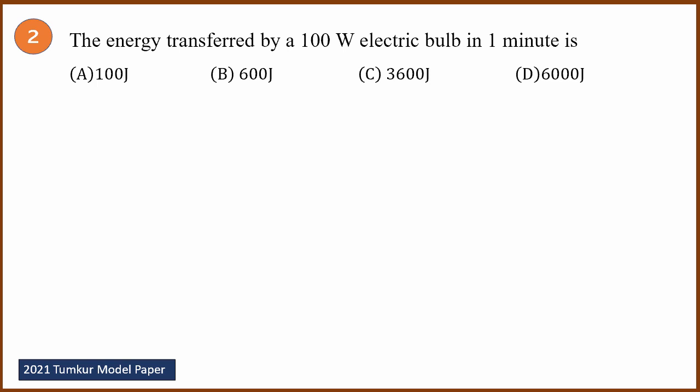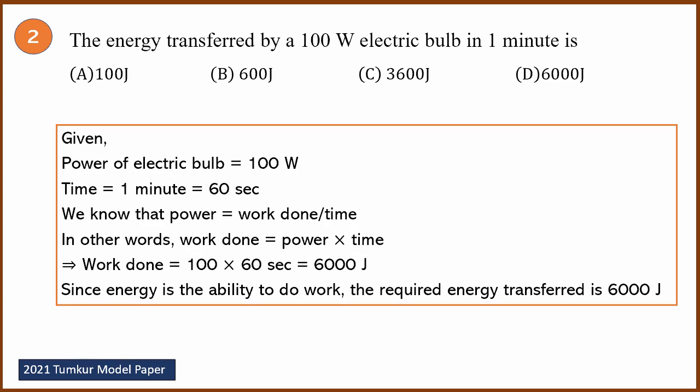Second question: the energy transferred by a 100 watt electric bulb in one minute. The power of the electric bulb is 100 watt. Time is one minute — convert it to seconds. Whenever they give time in minutes, always convert it into seconds, because second is the SI unit used in most calculations.